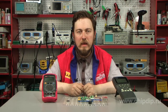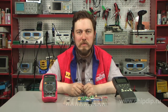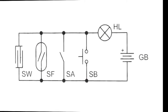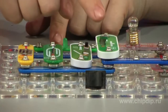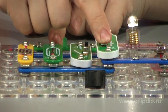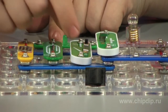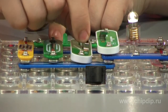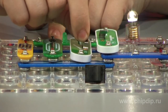Let us analyze a parallel connection of different switches. To do that, we will assemble a circuit as shown in the picture. All switching elements are connected in parallel. It is enough to close one of them so as to switch on the lamp.